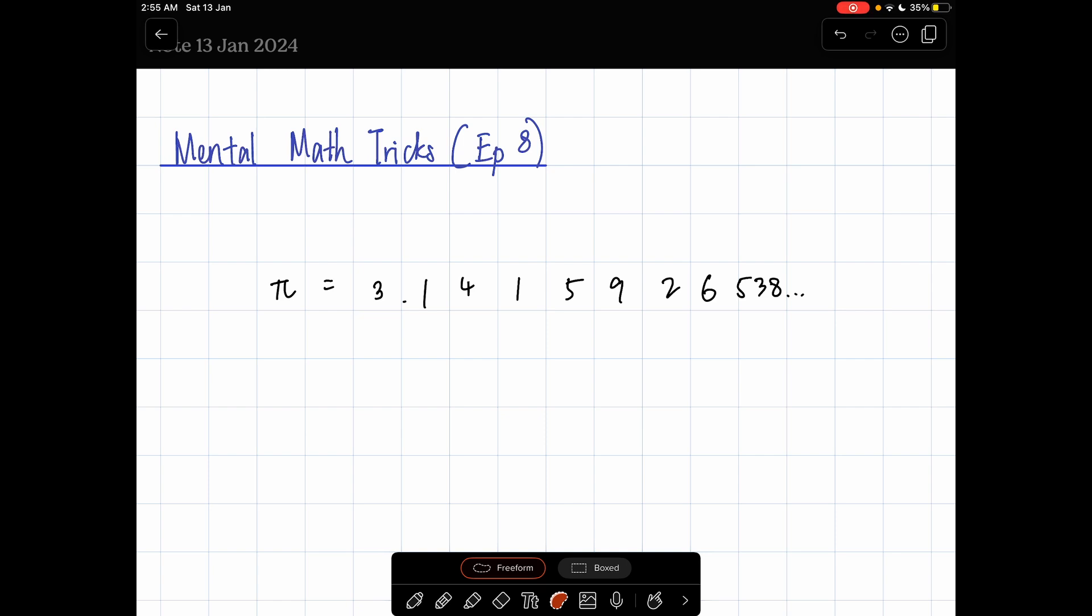As you can see, each number corresponds to a different letter. So, for 3, the alphabet will be M. For 1, it is T or D. For 4, we have R. For 1, we have T or D. Then, for 5, we have L. For 9, we have B or P. For 2, we have N. For 6, we have SH or CH sound. For 5, we have L again. For 3, we have M. And for 8, we have F or V. So, the moment you've gotten this, don't panic.